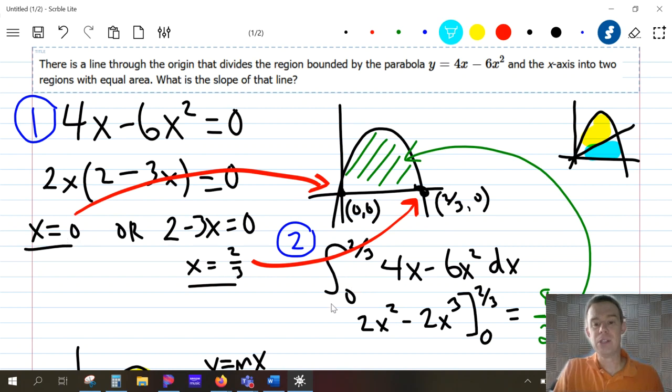That actually gives me my two values for my limits of integration. You can see at step two here. I've plugged those zero and two thirds into my limits of integration. And then I'm just integrating the parabolic function. And when you do that, it's just a simple application of the power rule. And you should get a total area of 8/27. Now, remember, I don't want that whole area. I want to actually cut that area in half. And so the area that I'm really looking for is 4/27. And that's a number that's going to come up in a little bit.